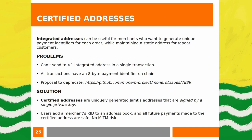Certified addresses are the solution: they enable generating unique Jamtis addresses that are digitally signed by a single private key. Users add a merchant's recipient identifier (RID) to their address book, and once added, any future payment address signed with that certified address will be verified against the fingerprint in their address book — confirming with certainty they're sending to the correct address, with no risk of a man-in-the-middle attack modifying the address.